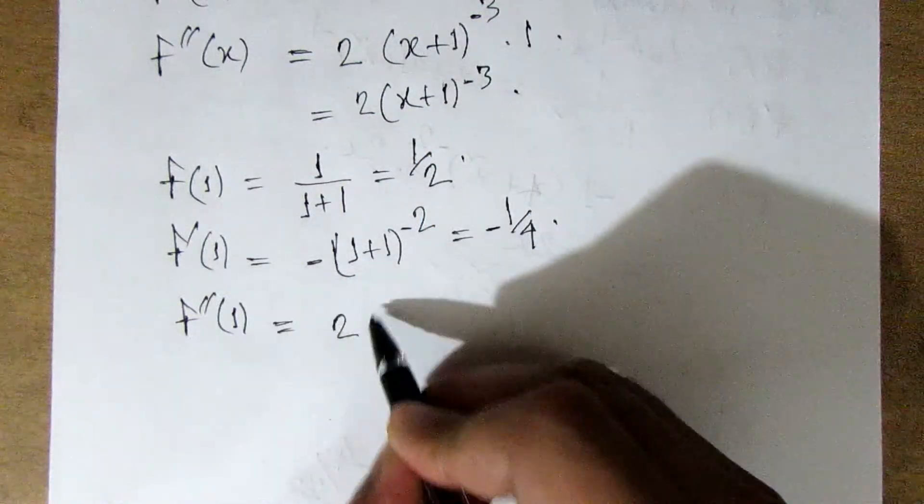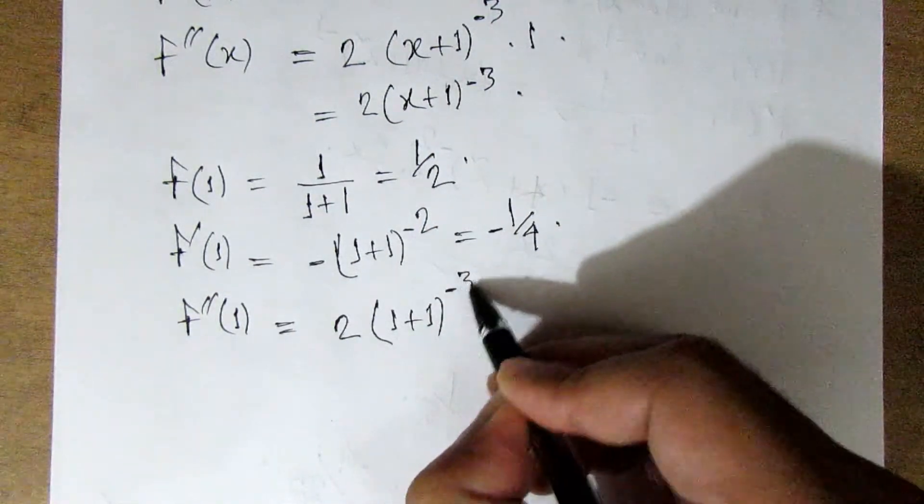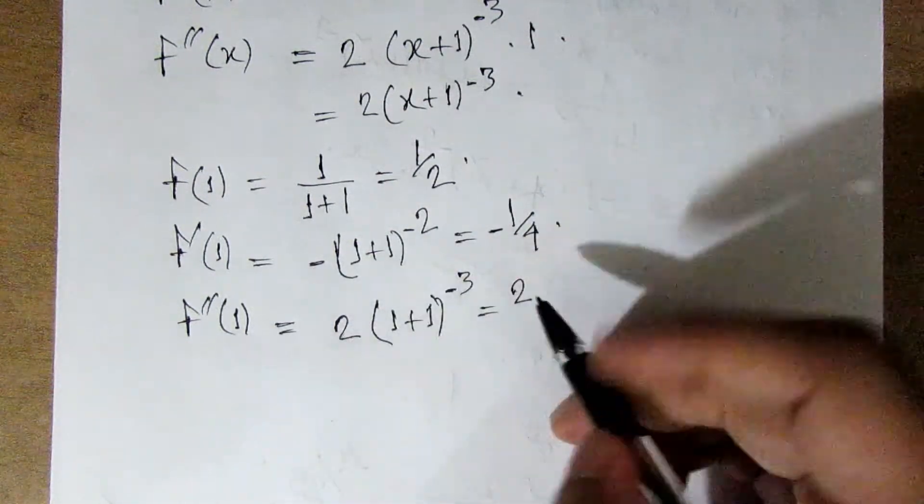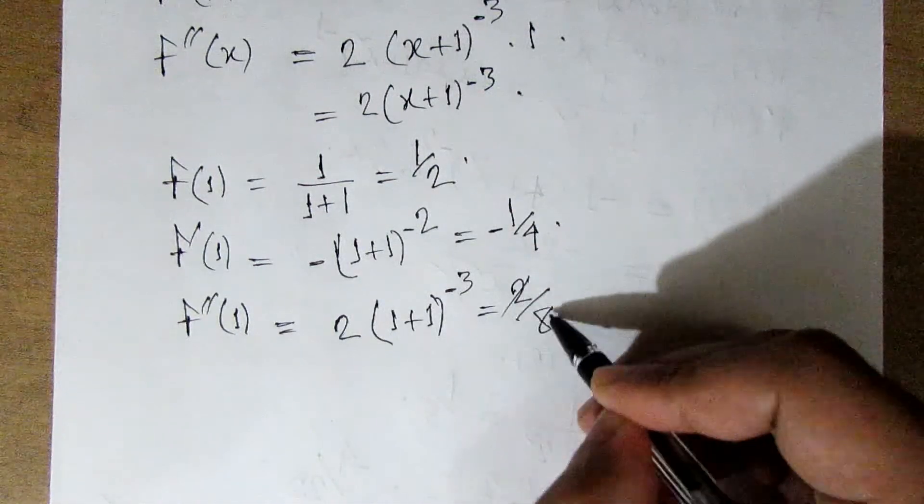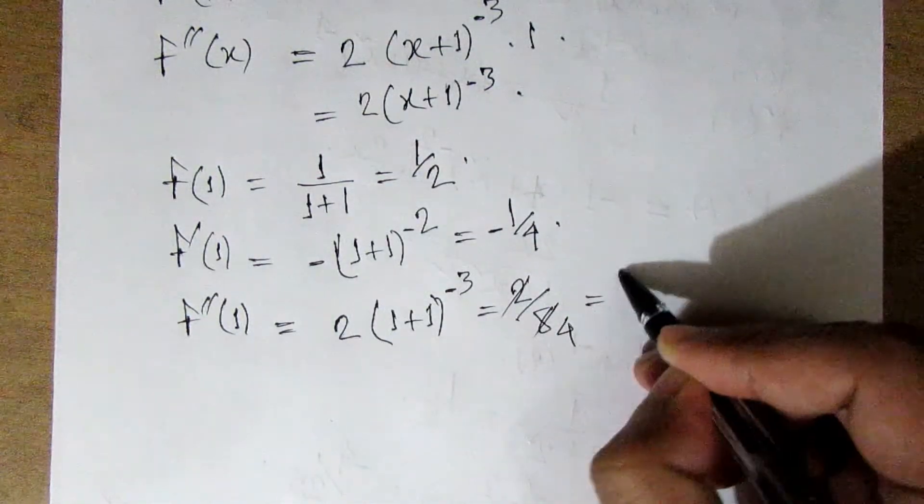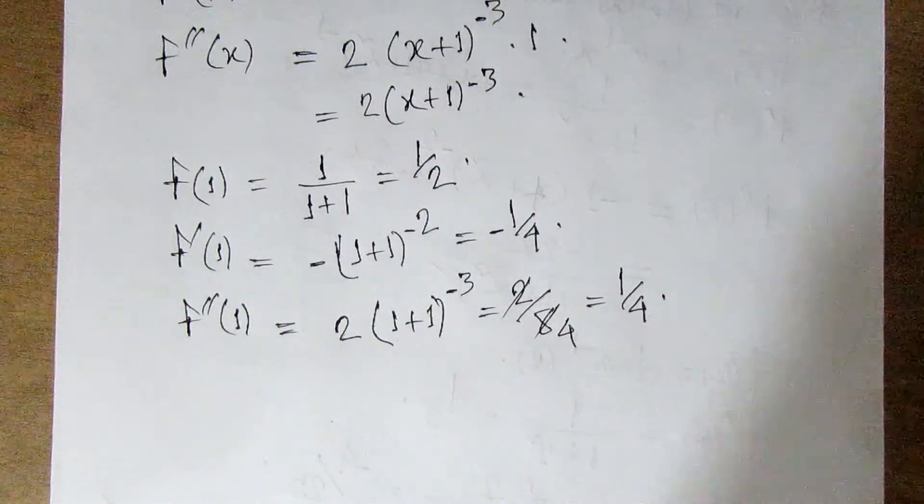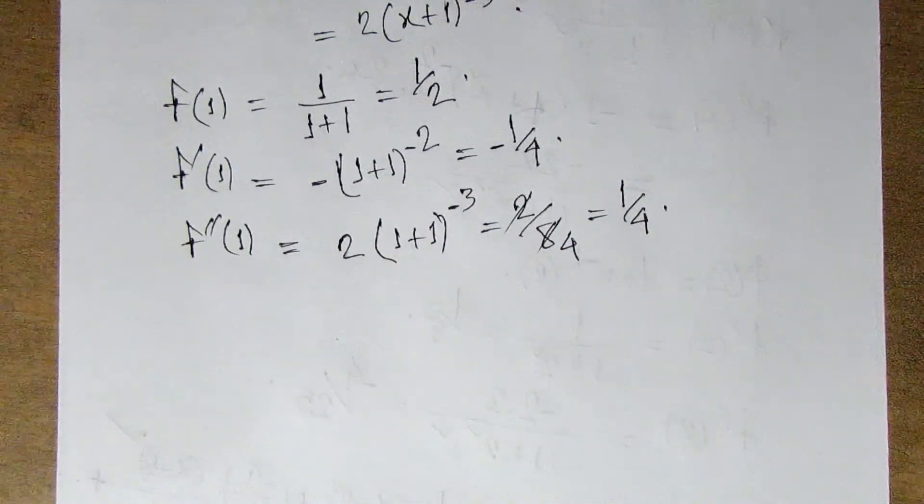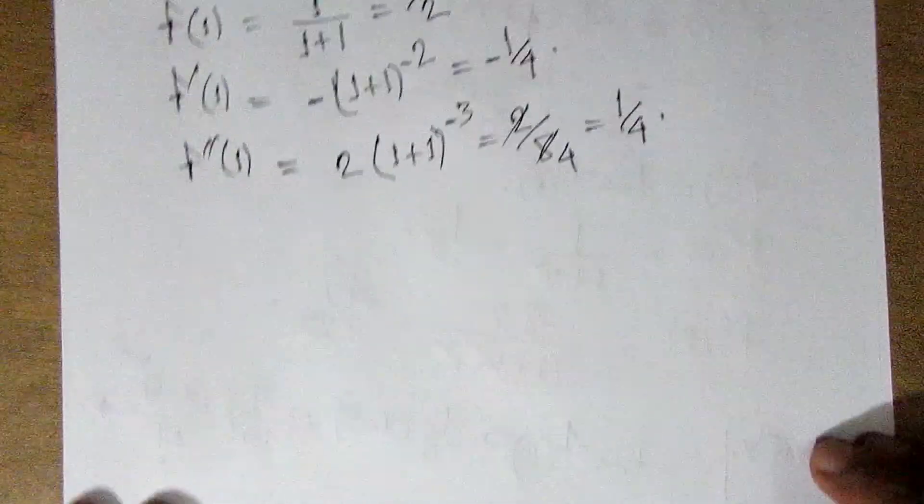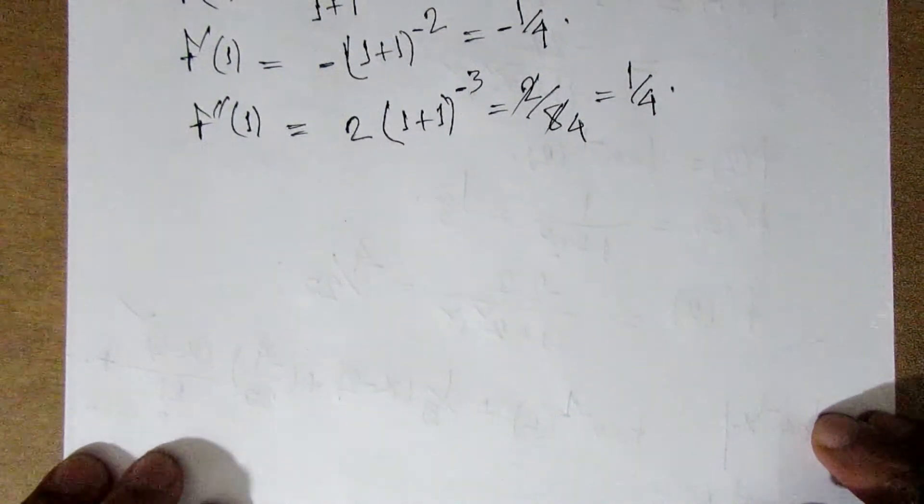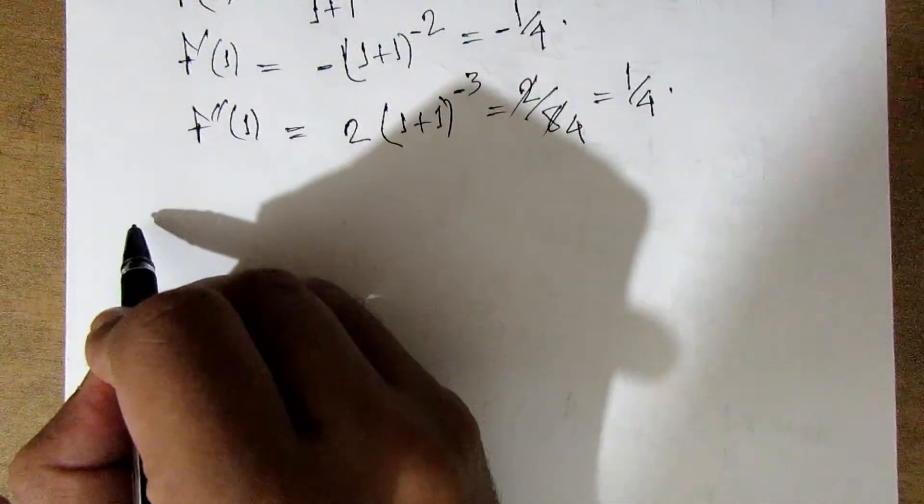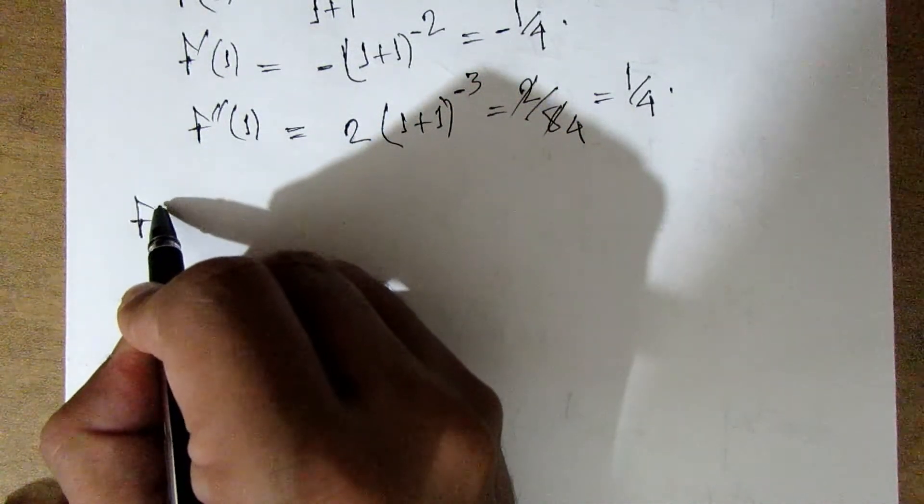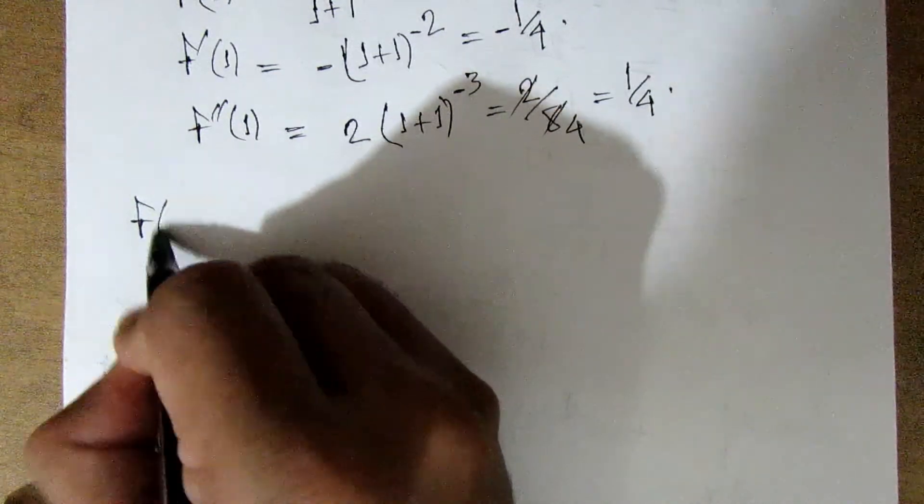f double prime of 1 equals 2 times 1 plus 1 to the minus 3, which equals 2 by 8 or 1 by 4. f triple prime equals minus 2, so 1 plus 2.